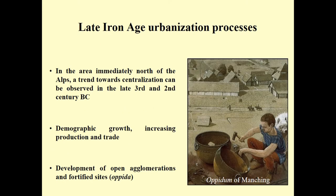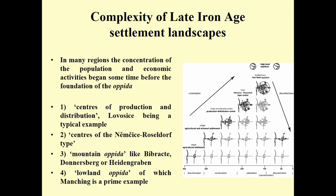I have published in the last years — as have many other colleagues — quite a lot on the earliest stage of the sixth and fifth century BC Fürstensitze. Today I will focus on the late Iron Age urbanization processes that took place between the third and the first centuries BC. After the period of decentralization of the fourth and early third centuries BC, we see a new movement towards concentration of population, an increase in economic production and trade activities related to demographic growth — both open agglomerations and the fortified sites.